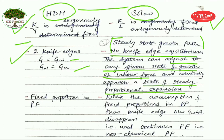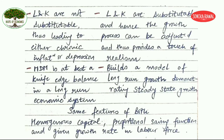The third difference is that the Harrod-Domar model assumes fixed proportions in the production function, but the Solow model relaxes this assumption. This is why the knife edge between Gw and G disappears in the Solow model. By relaxing the fixed-proportion assumption, Solow considers a continuous production function known as the neoclassical production function. This is how the Solow model is an advancement over the Harrod-Domar model.